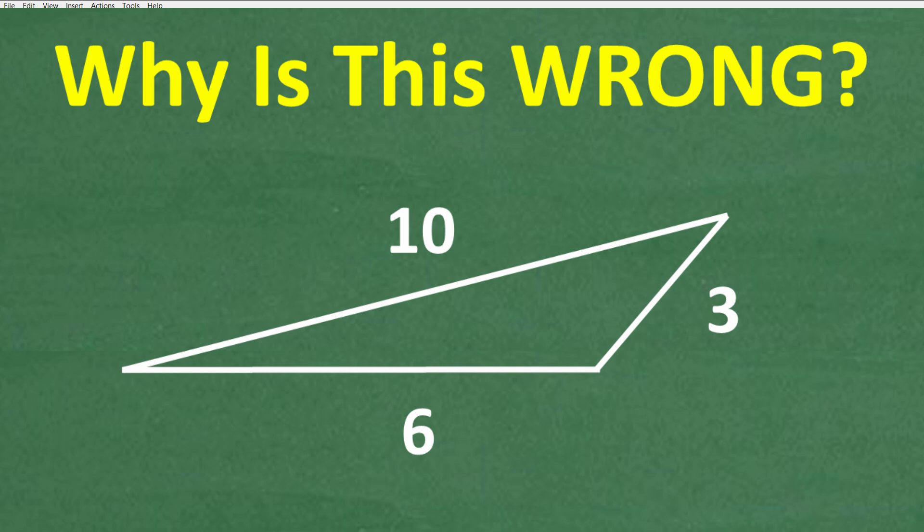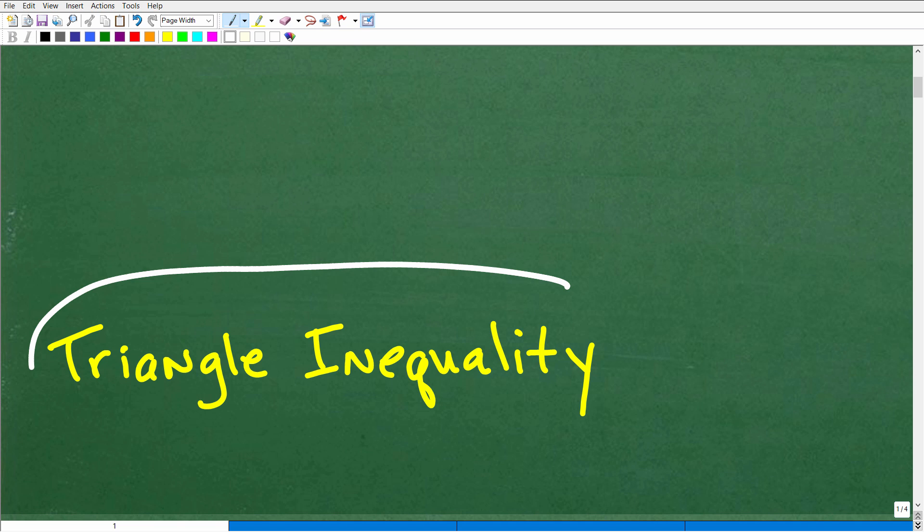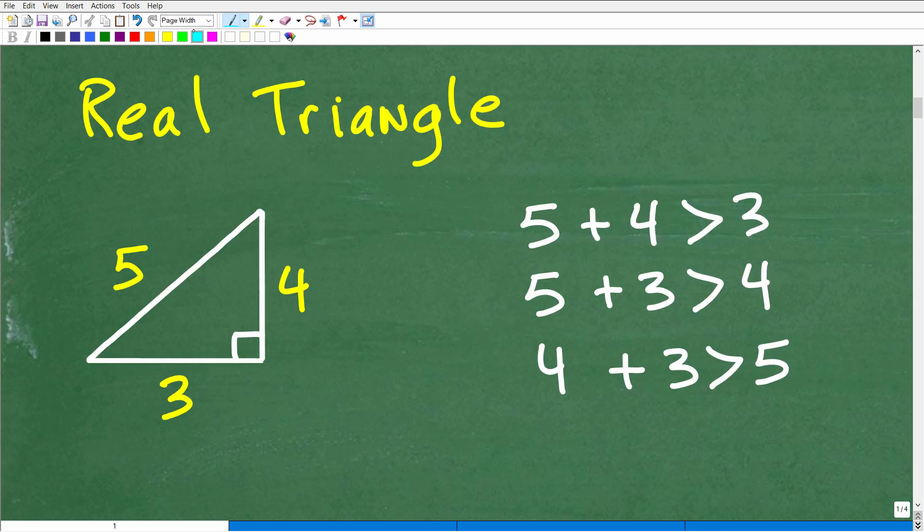Well, let's go ahead and take a look at the answer right now. It's very simply because of what we call the triangle inequality. This is not that difficult. There's a couple different takes on the triangle inequalities, but we're only going to take a look at one here.